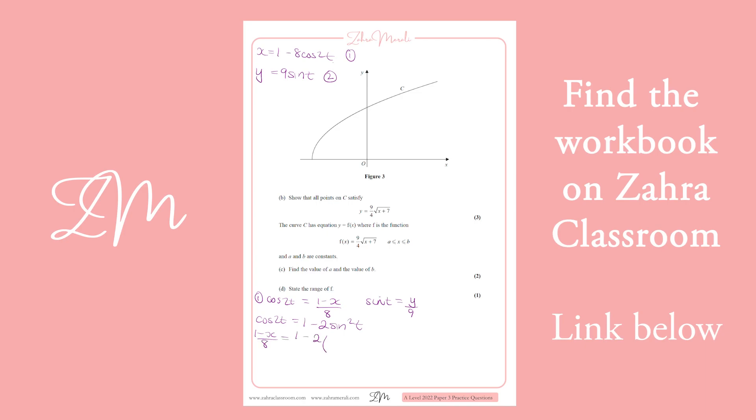And we substitute in. So 1 minus x over 8 equals 1 minus 2 y over 9 squared. And so we want to make this y, the subject of the formula. It's only one mark for all the manipulation, so don't spend too long playing with it. So we've got 1 minus x, so we'll have 1 minus x over 8 equals 1 minus 2. And this is going to give you y squared over 81. So when we do that, we can then multiply up some stuff. So if I put the y's onto the left-hand side, I'm going to have 2 over 81 y squared equals 1. If I split that up, minus 1 over 8 plus 1 over 8 x.